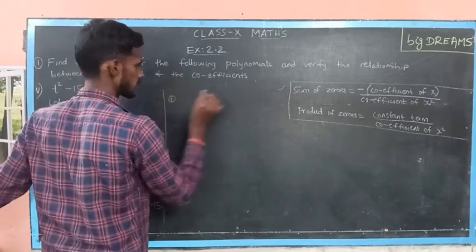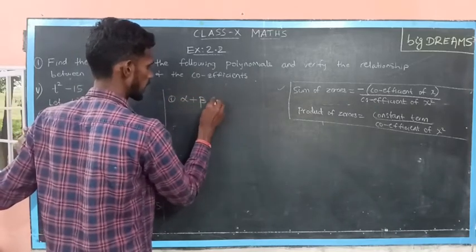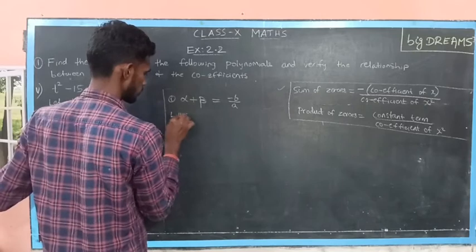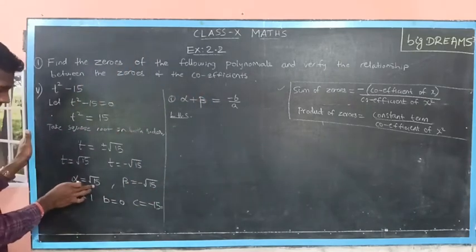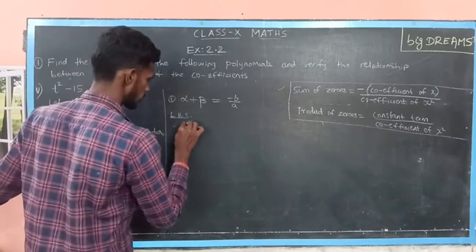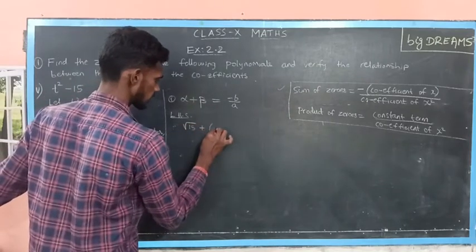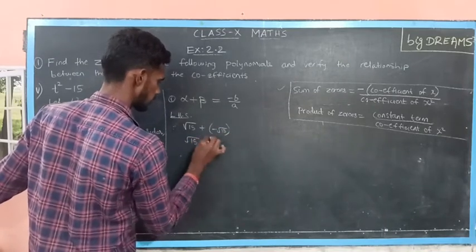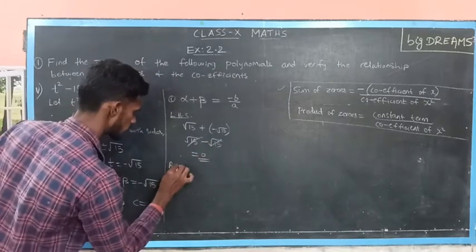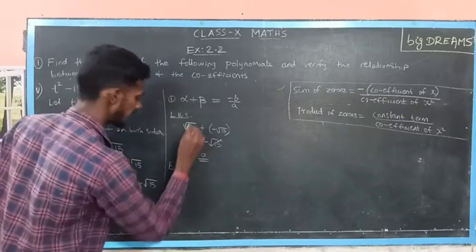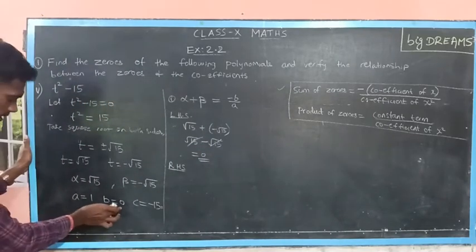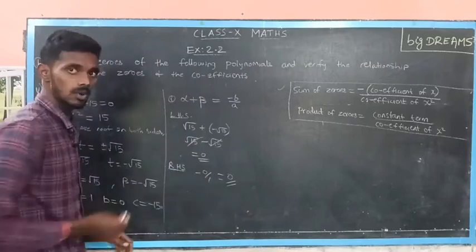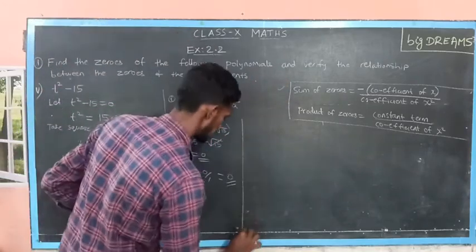Consider the first condition: sum of zeros, alpha plus beta, is equal to minus b by a. Consider the LHS: alpha plus beta, that is plus root 15 plus minus root 15, which is root 15 minus root 15. These cancel and it will be 0. Then RHS: minus b by a, which is minus 0 by 1, which is 0. So, LHS is equal to RHS. Thus, the first condition is verified.